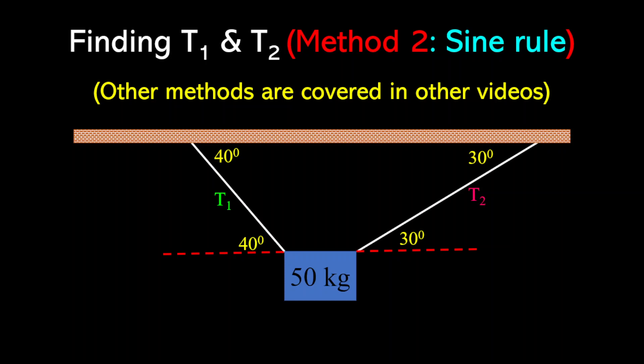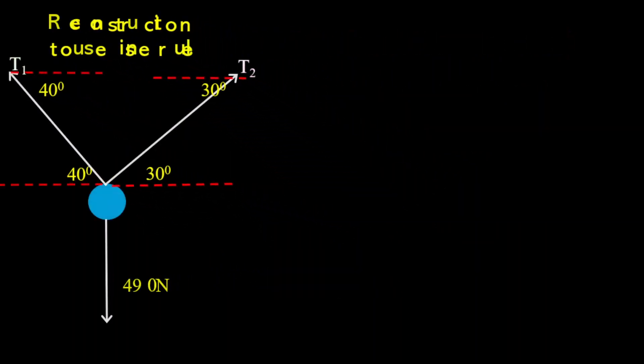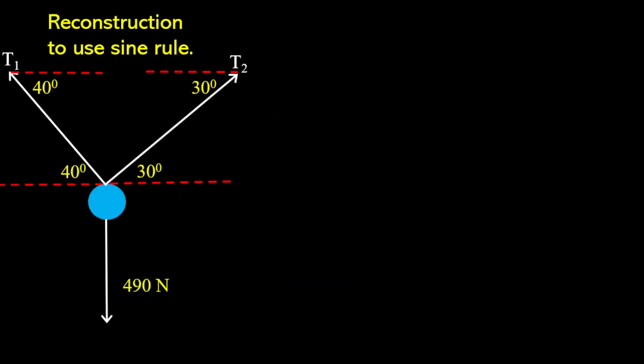Now the first thing I want to do here is to reconstruct this diagram to make it easier to apply the sine rule. A point to note is that each force is acting on the mass relative to each other in a particular direction. And so what I'm going to do first, I prefer starting with the vertical force, so I'm going to represent my 490 newton first, and that is going downwards.